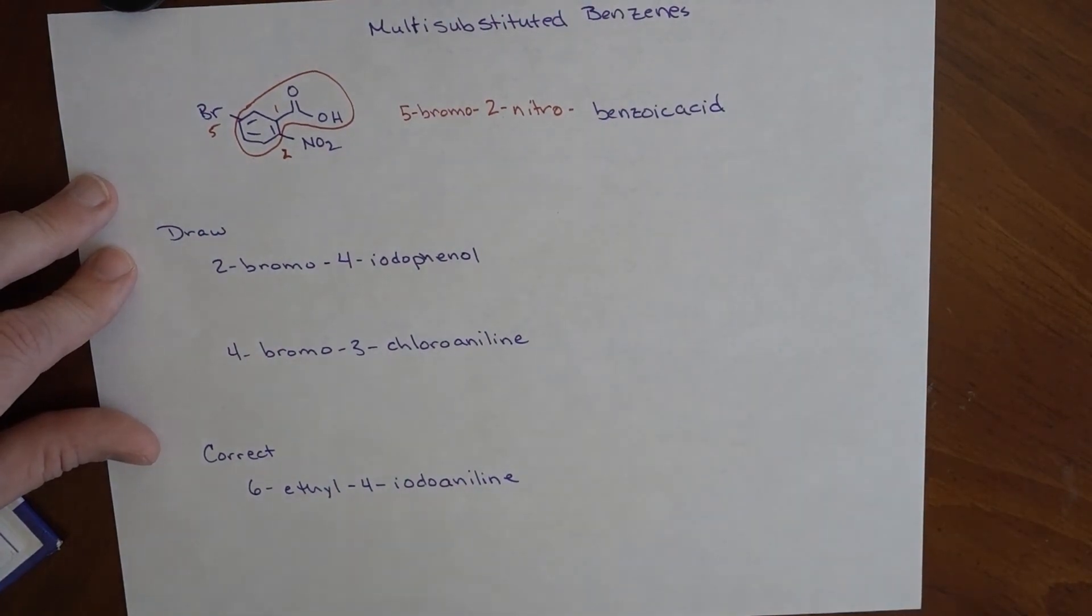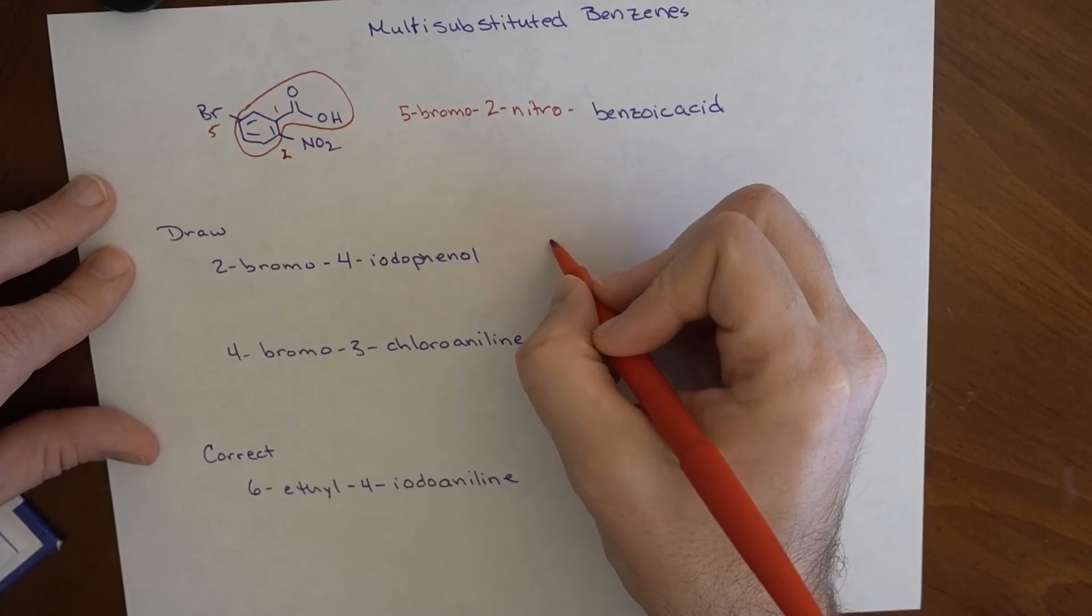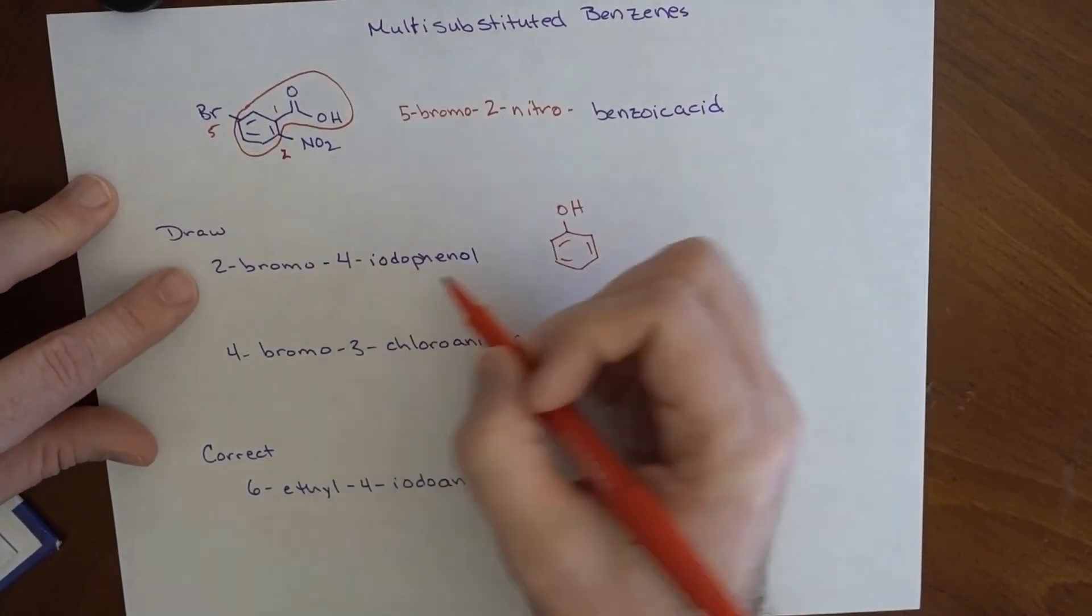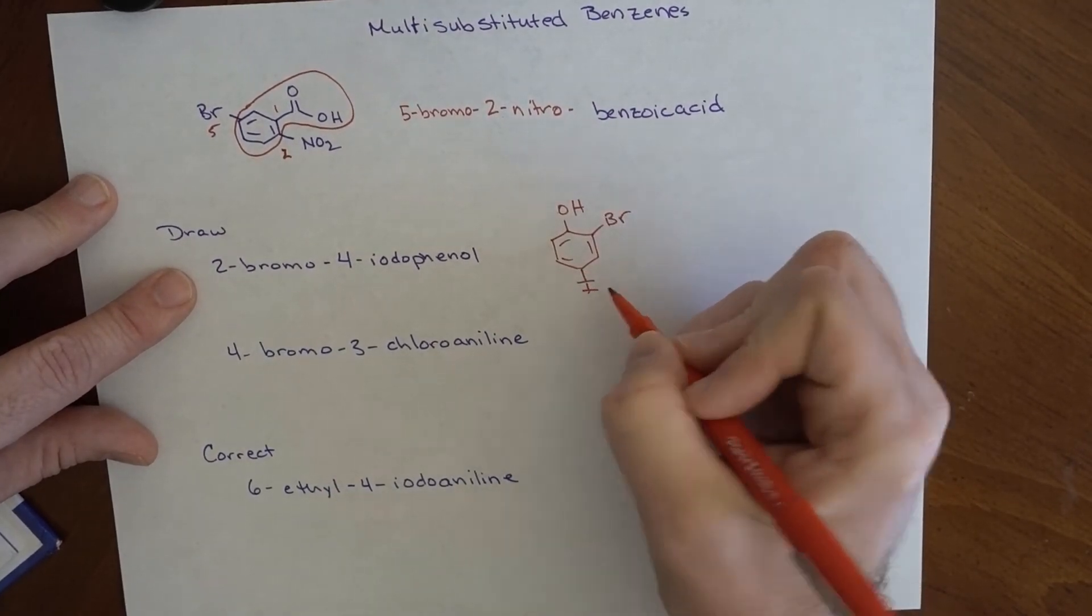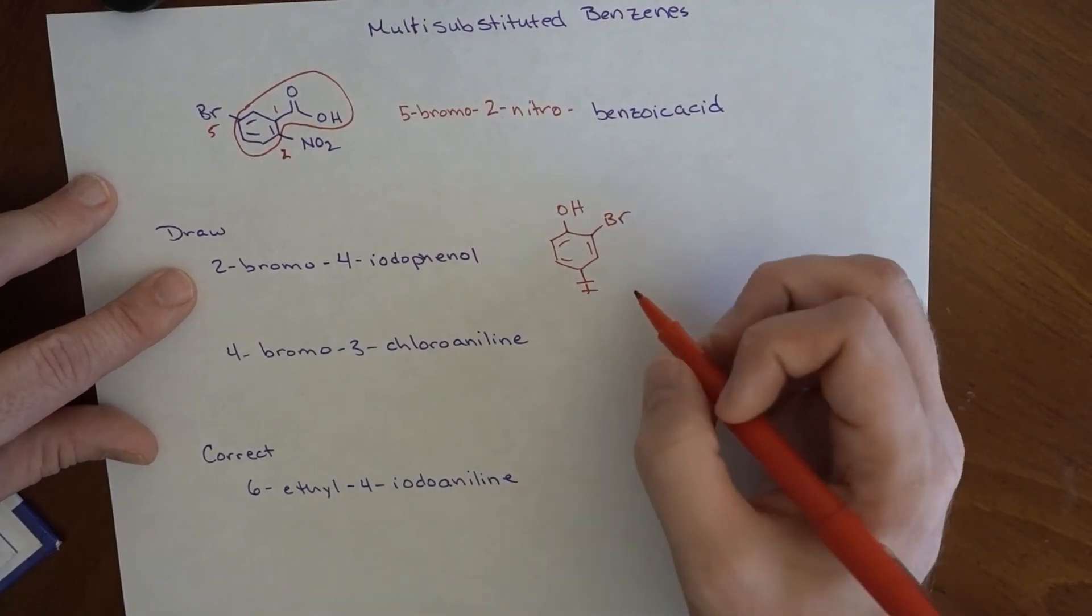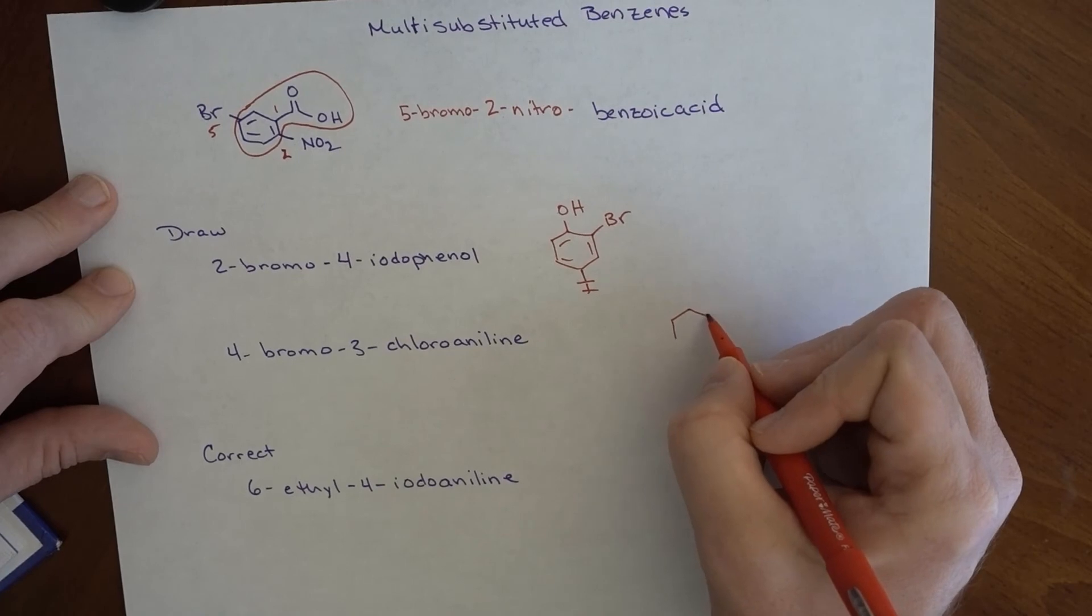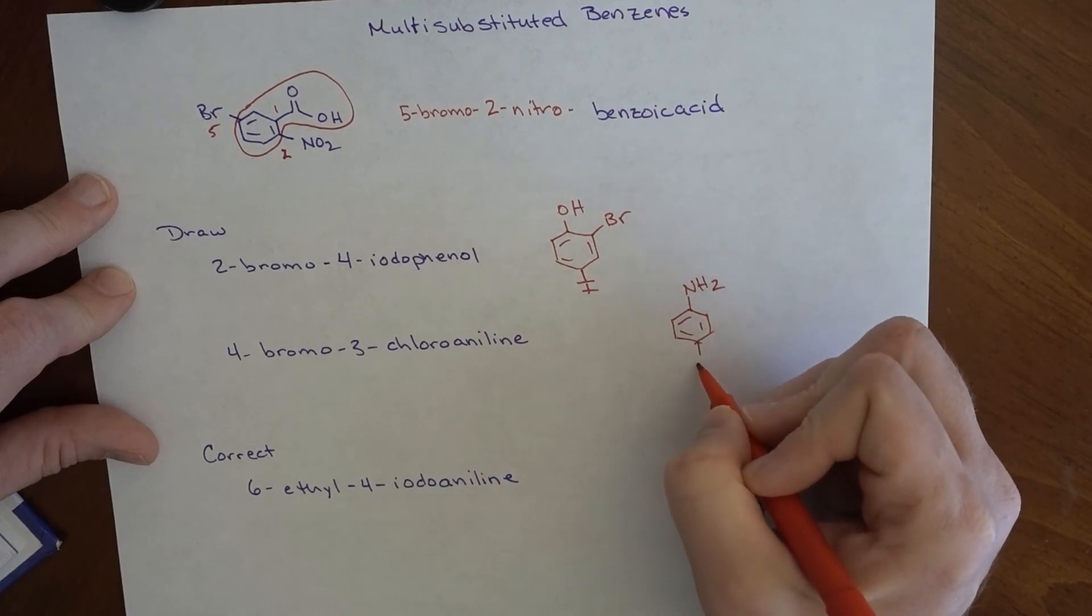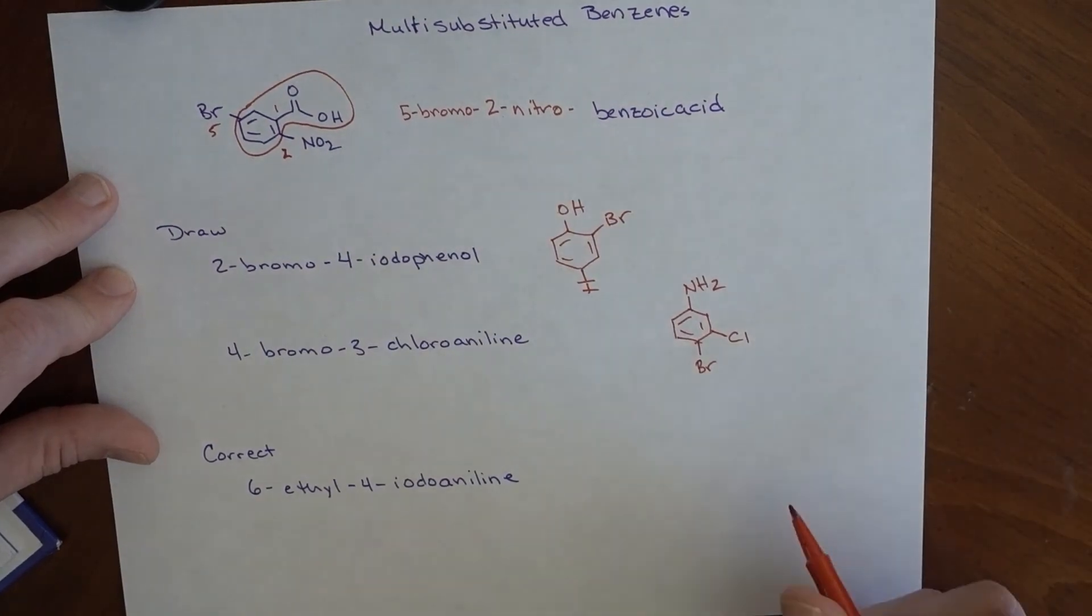Given ourselves a challenge here. How would we draw 2-bromo-4-iodophenol? Here is phenol, 2-bromo, 4-iodophenol. 4-bromo-3-chloroaniline. Aniline is this, and 4-bromo would be here. 3-chloro would be here. Not so bad.